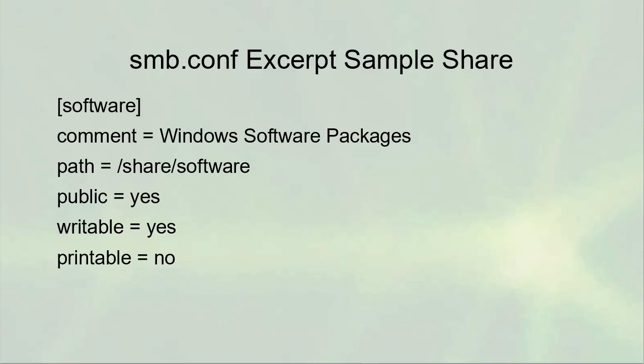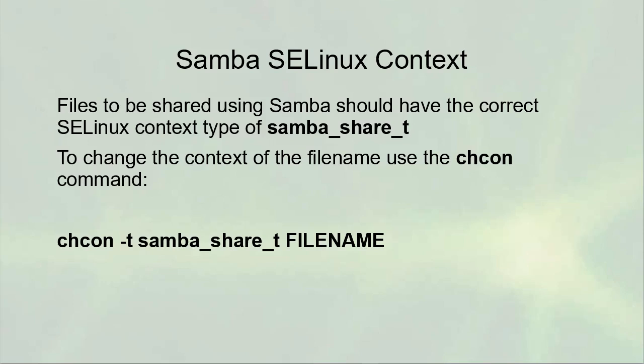Here is an example excerpt from the smb.conf file. We have a share called 'software' which is being exported. That share is based on the /share/software directory, so whatever files are in that directory are being exported. When that directory shows up on a remote machine it will be called 'windows software packages'. It is public so you can see it, it is writable so it's read-write, but it is not printable, so it's not a printer.